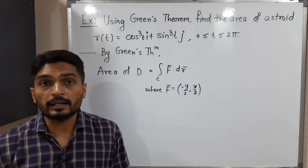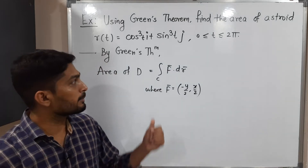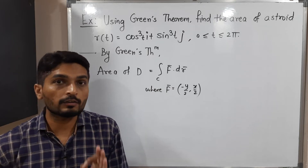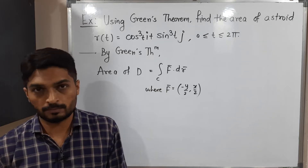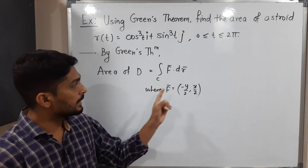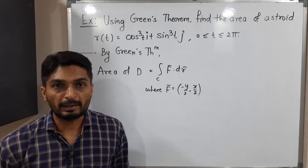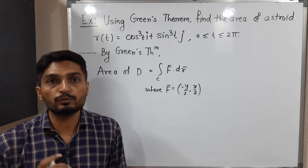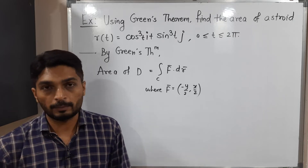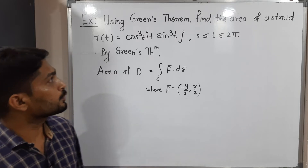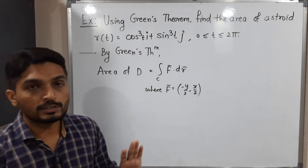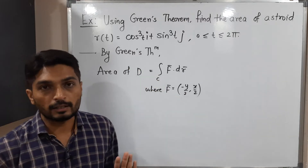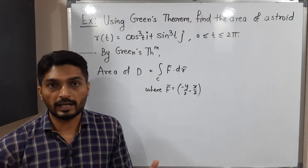So when we want the area of any region, that area can be calculated by solving this line integral. In this case the vector field is fixed: A-bar = (−y/2, x/2). We use this fixed vector field to find the area. To find the area of the asteroid I will use the same function and solve this integral.